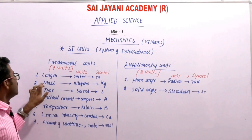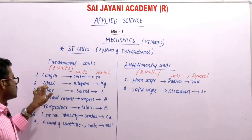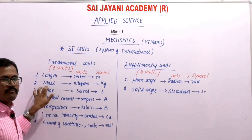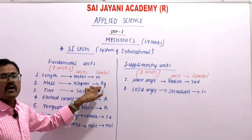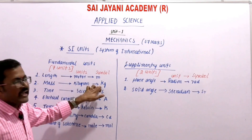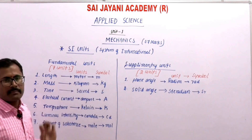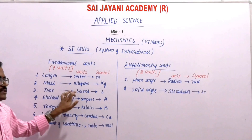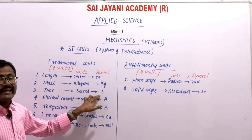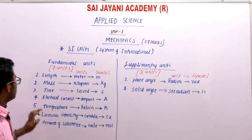The second quantity is mass. The SI unit of mass is kilogram, represented by the symbol 'kg' — small letter k and g. The third quantity is time. The SI unit of time is second, represented by capital 'S'.